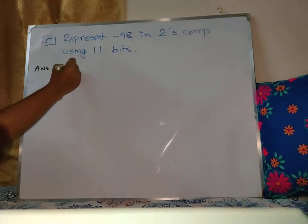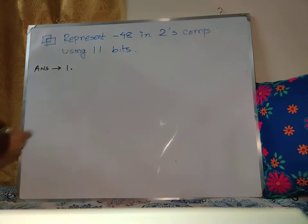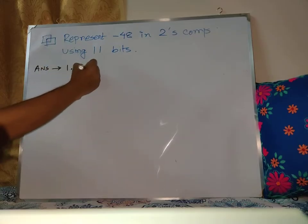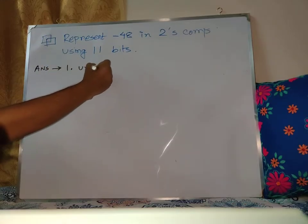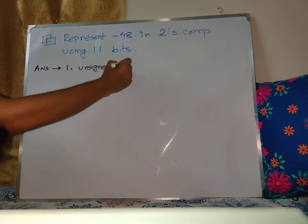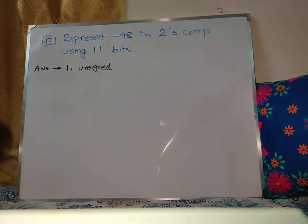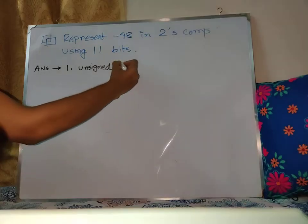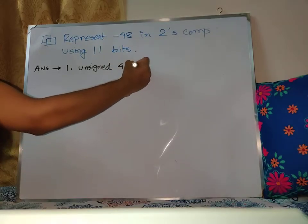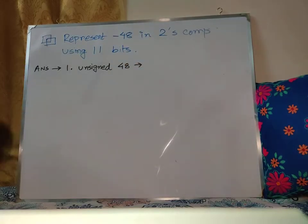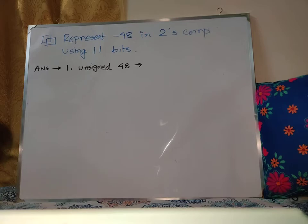Step by step. First step is: take the unsigned version of the number. So the first step is to take 48 only — the unsigned representation — which gives us the correct positive 48 in binary.